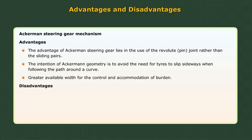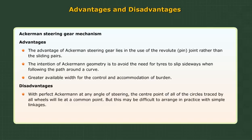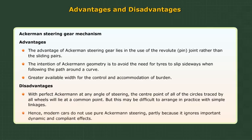Disadvantages: With perfect Ackerman, at any angle of steering, the center point of all the circles traced by all wheels will lie at a common point. But this may be difficult to arrange in practice with simple linkages. Hence, modern cars do not use pure Ackerman steering, partly because it ignores important dynamic and compliant effects.